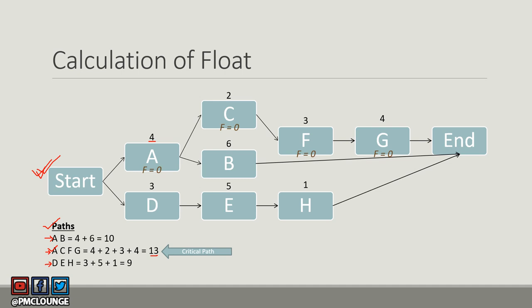Float for critical path activities is always zero. Activities A, C, F, and G have a float of zero because they are critical path activities and cannot be delayed at all.